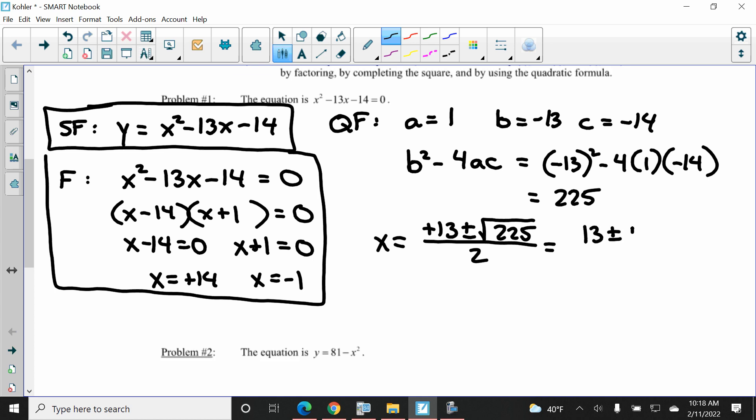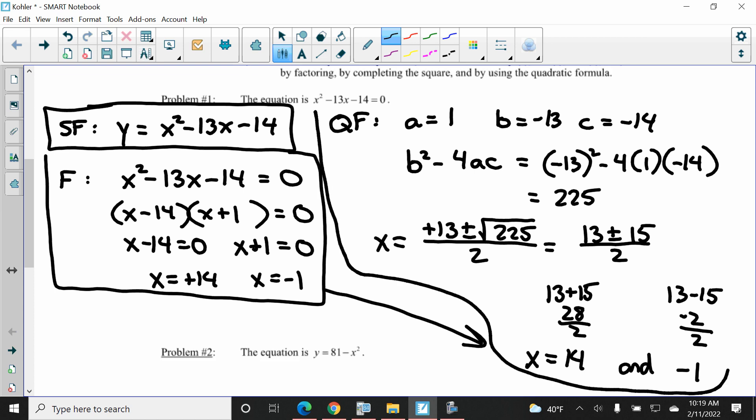So we have 13 plus or minus 15 divided by 2. 13 plus 15 is 28 divided by 2 gives us the answer. X is 14. And 13 minus 15 is negative 2. Negative 2 divided by 2 is negative 1. There's our answers. And once again, you should see that these answers are the same. That has to be the case. All right. So there's the quadratic formula. Now we're halfway done.